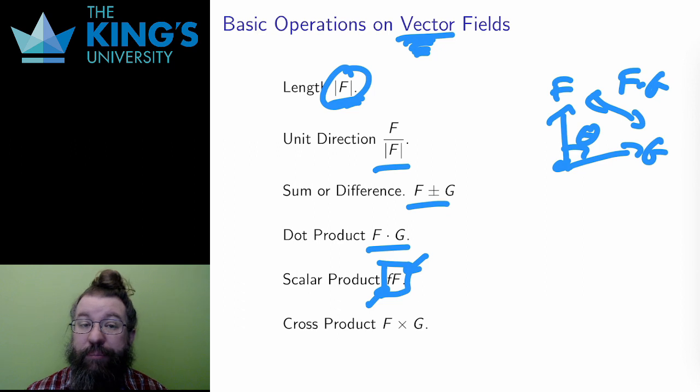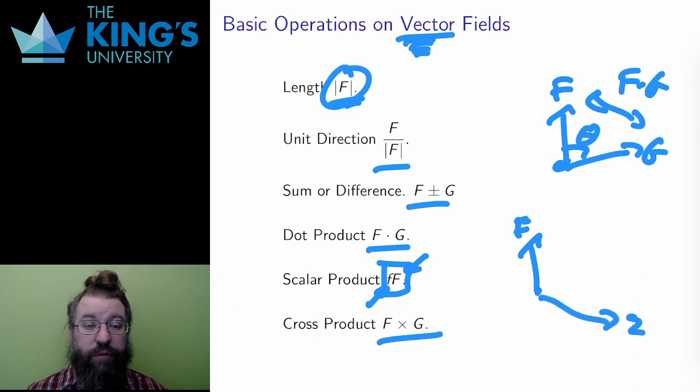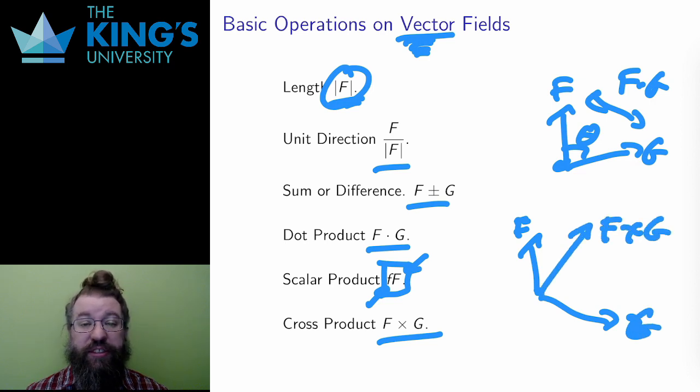And finally, if F and G are vector fields in R^3, I can take their cross product. This produces another vector field which is perpendicular to both of the original vector fields at all of the points where they are defined. The key idea in all of these constructions is that a vector field gives a vector at each point. And then I can do vector operations at each point. Therefore, I can do vector operations on the vector fields as a whole, doing everything point by point.